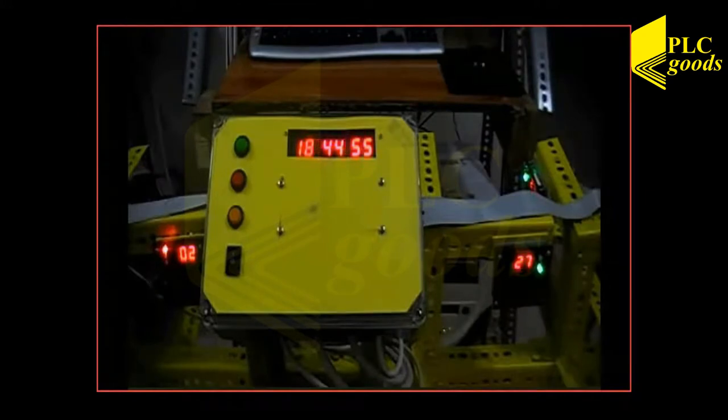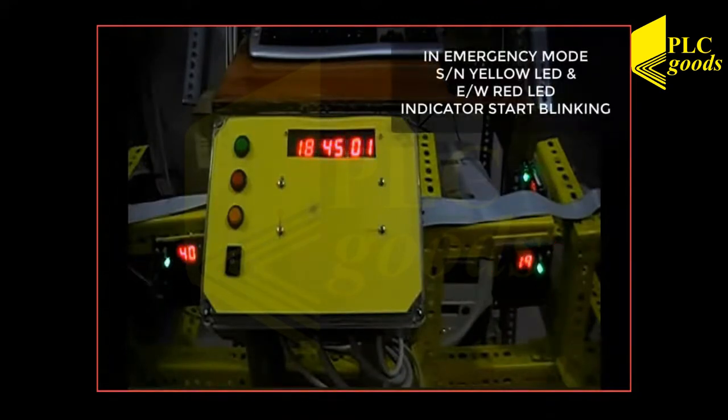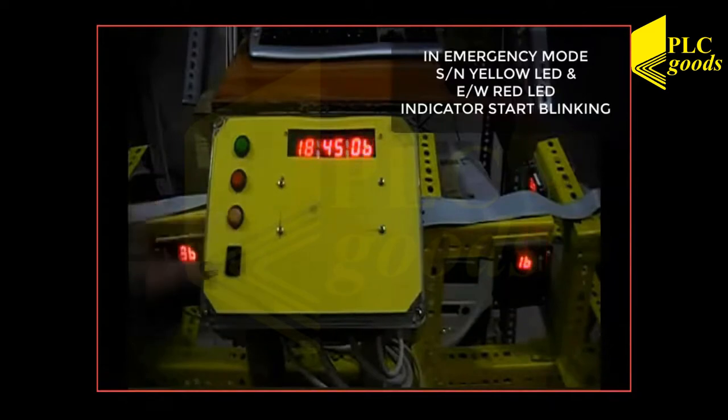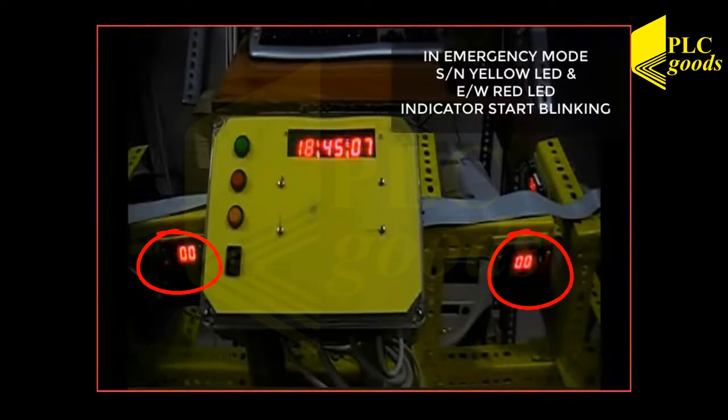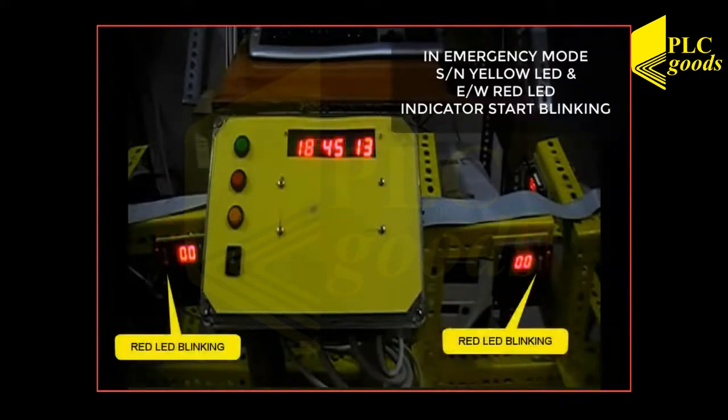As you can see now, the system is in normal mode. Timers and traffic lights are working. Now let me press the emergency push button. When the emergency push button is pressed, timers won't display time and all yellow LEDs of the south-north street and also all red LEDs related to east-west street start blinking.